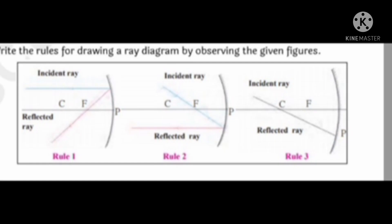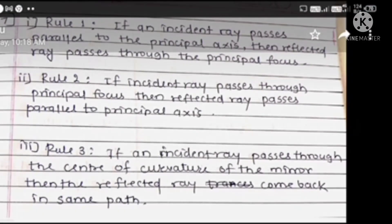Rule 7: Write the rules for drawing a ray diagram by observing the given figures. Rules for drawing ray diagrams are given here. We have to write down the rules: first, second and third.